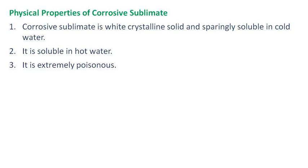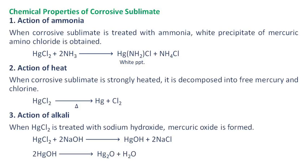Physical properties of corrosive sublimate: Corrosive sublimate is a white crystalline solid and is sparingly soluble in cold water. It is soluble in hot water. It is extremely poisonous.